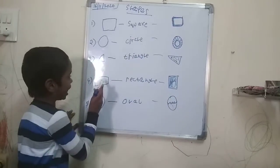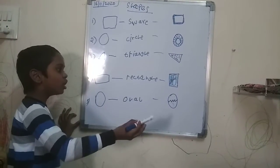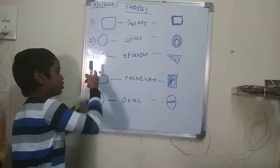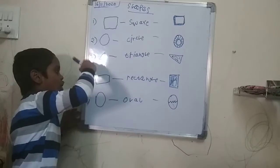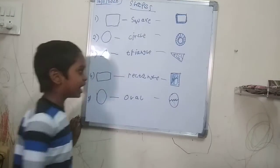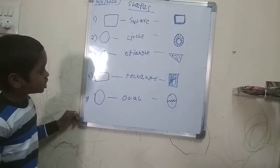This is a rectangle. A rectangle looks like a book and a door. A rectangle has big lines and small lines. It looks like a door and book.